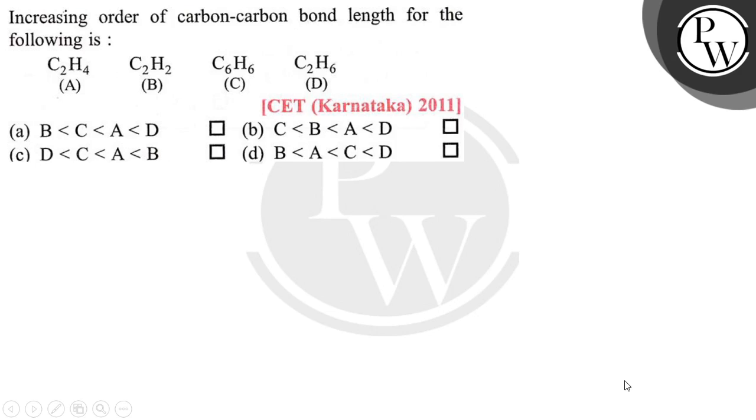Hello, let's read the question. The question says increasing order of carbon-carbon bond length for the following is A, B, C, D are the molecules or compounds. We have to find out the correct bond order of the bond length.